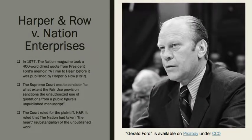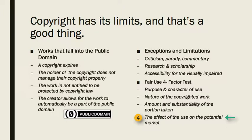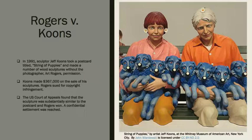In Harper and Row versus Nation Enterprises, the U.S. Supreme Court held that the Nation magazine quoted what the court considered to be a substantial amount from President Ford's memoir without the permission of the publisher, Harper and Row. The use was found not to be fair. Number four: the effect of the use upon the potential market for or value of the copyrighted work. Does your use of the work deprive the copyright owner of income that they could have made if you purchased the work? In Rogers versus Coons, a sculptor used a copyrighted photograph as a basis to create wood sculptures which had the qualities of the photograph. He made hundreds of thousands of dollars on the sculptures. The photographer sued, and the sculptor claimed fair use because the photographer was not going to make sculptures. The sculptor lost. The court sided with the photographer, stating that a potential market for sculptures of the photograph existed.